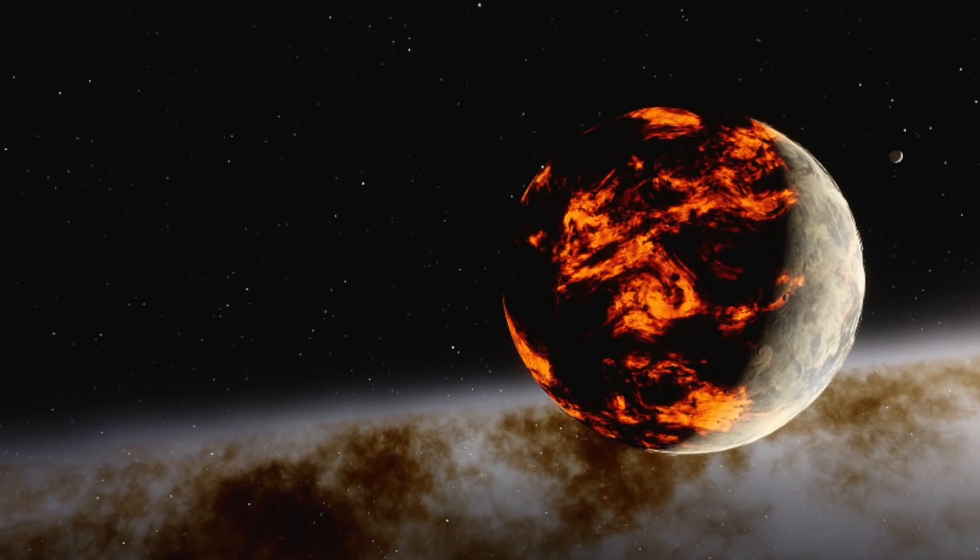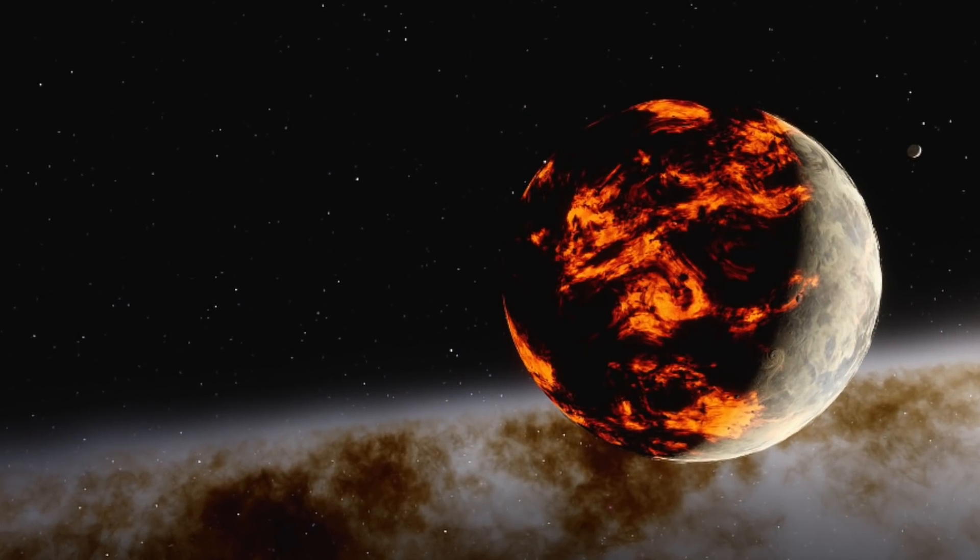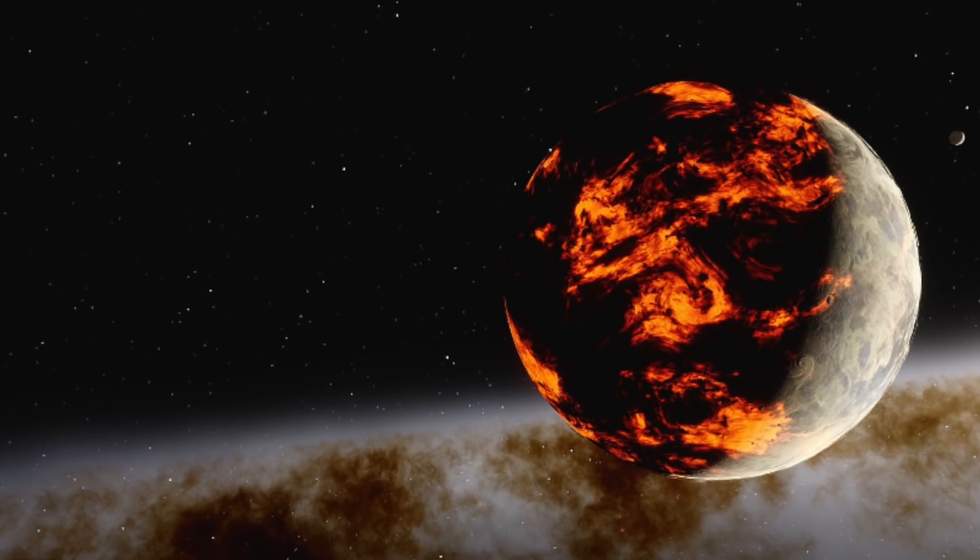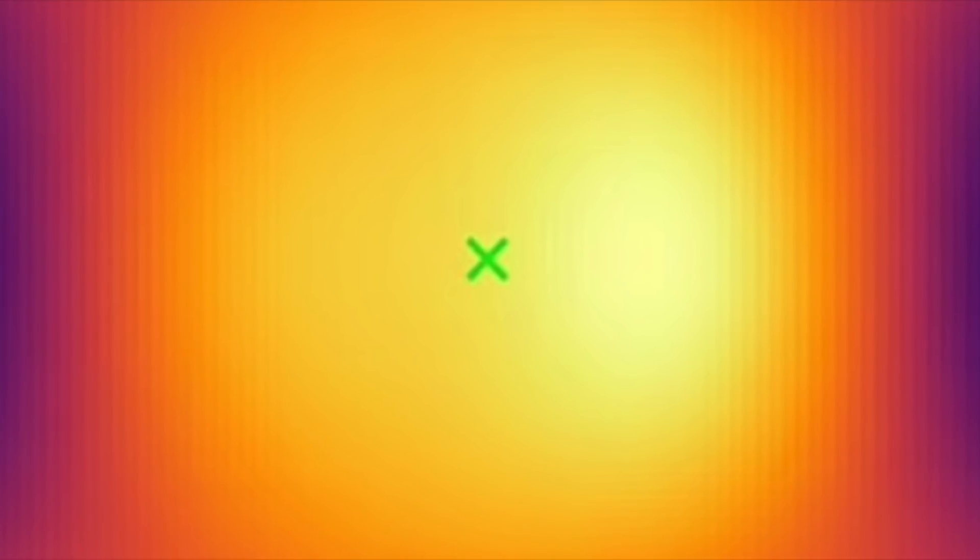On the sun-facing side, water particles are blasted apart by the intense heat, where they are then blown to the cooler side to reform into liquid before being blown back to the beginning of the process, which is fueled by incredibly powerful winds stirring up the planet's surface at speeds of over 17,000 kilometers per hour.